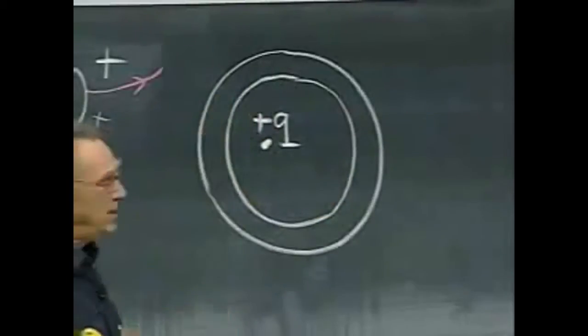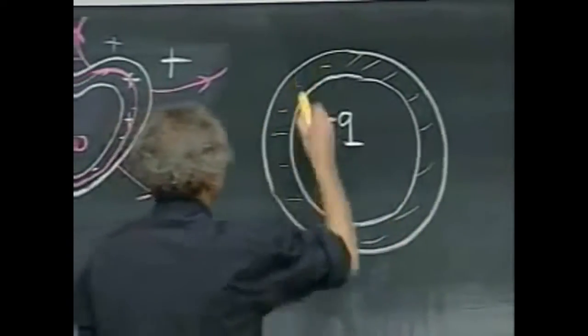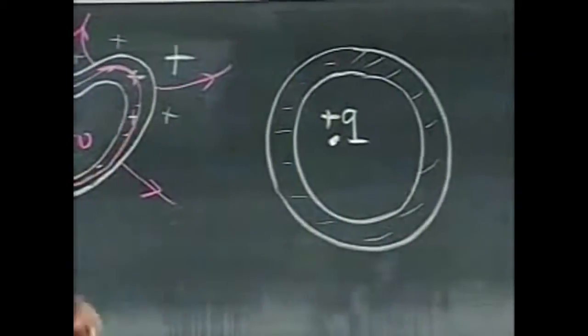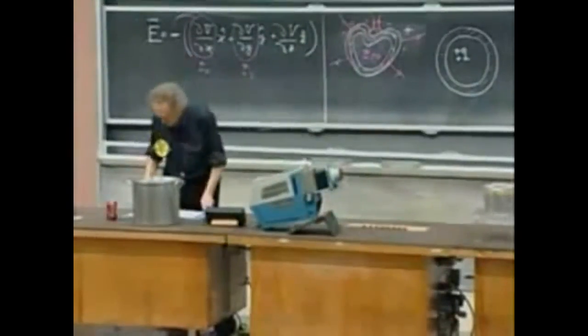But the electric field inside the conductor, that means the electric field anywhere here must be zero. If it's not zero, the electrons will keep moving until it is zero. So the conducting material itself has no electric field.